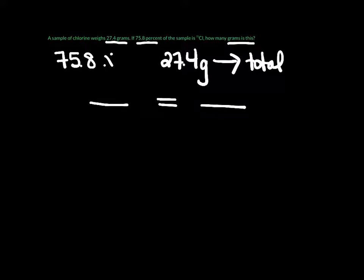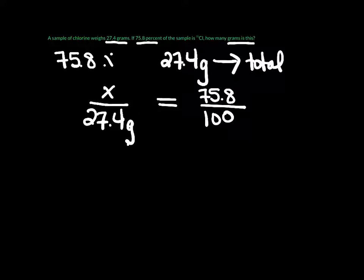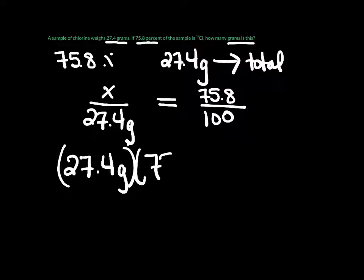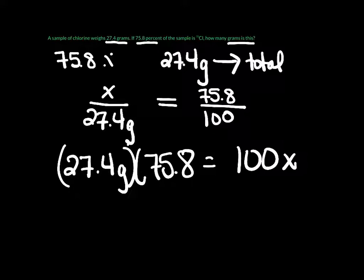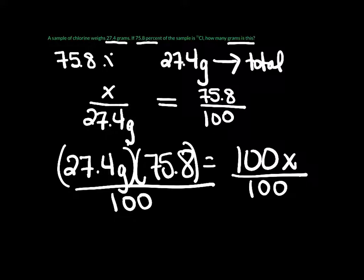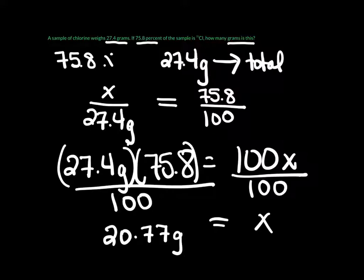Let's set up our equation. On one side, 75.8 out of 100. On the other side, the total 27.4 on the bottom and x on top. Cross multiplying: 27.4 times 75.8 equals 100x. Dividing both sides by 100, x equals 27.4 times 75.8 divided by 100, which gives 20.77 grams. Just as we suspected, this is smaller than the total sample.